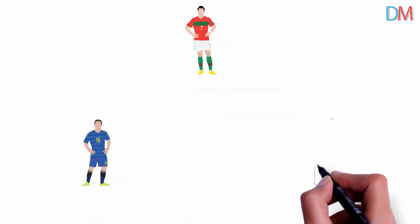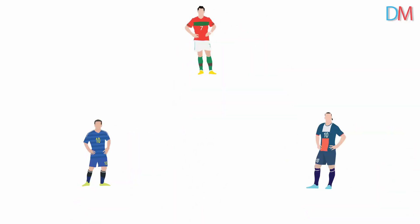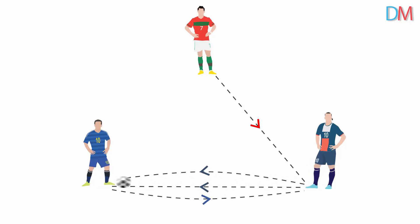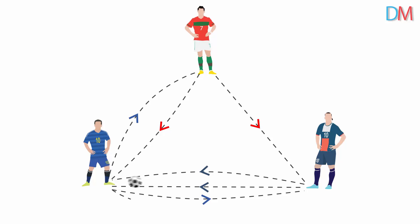Ronaldo, Messi and Zlatan are warming up before an All-Stars football game. Ronaldo gets the ball and passes on to Zlatan. Zlatan then passes the ball to Messi, and then Messi passes the ball back to Zlatan, and many such passes are exchanged.